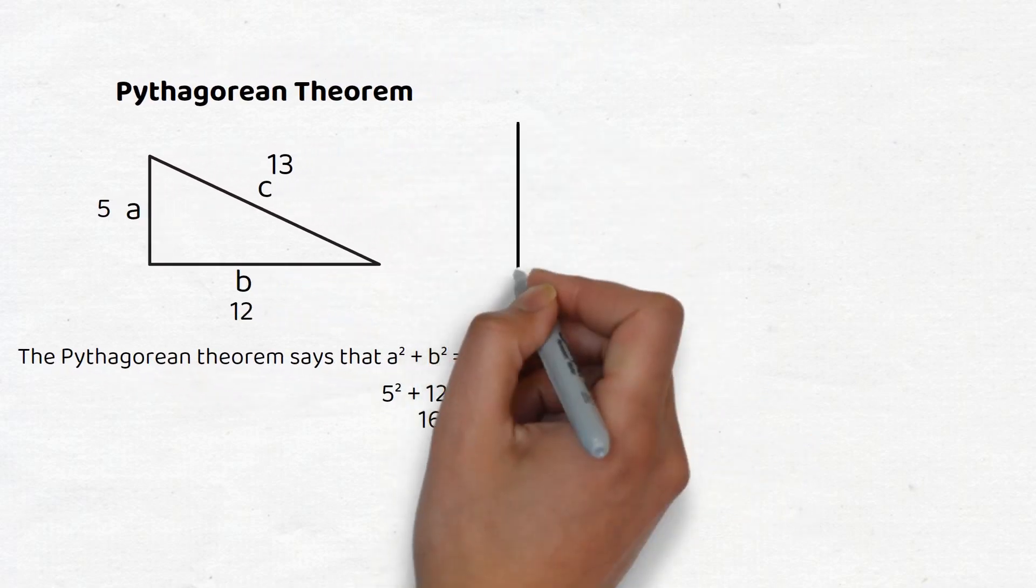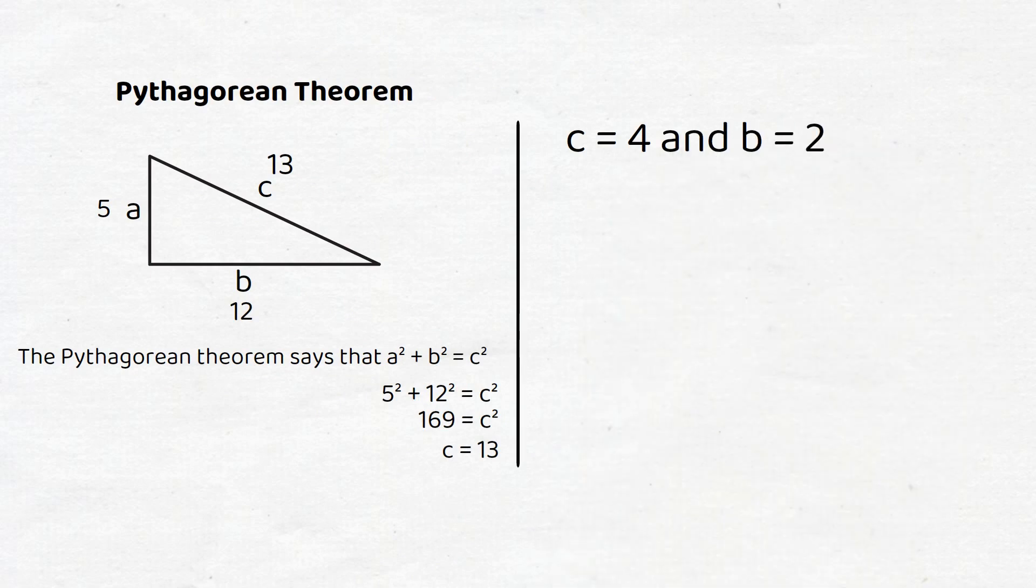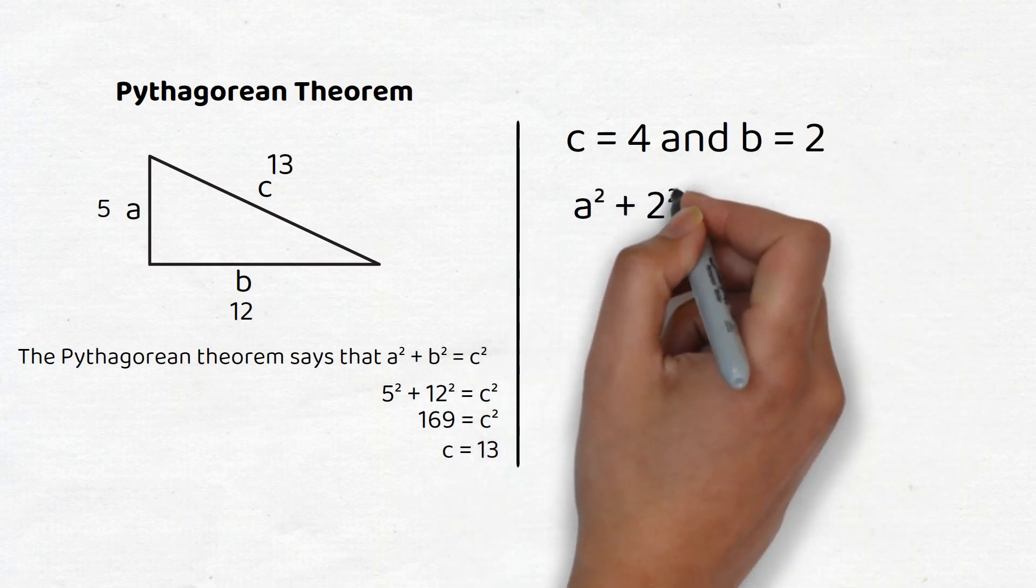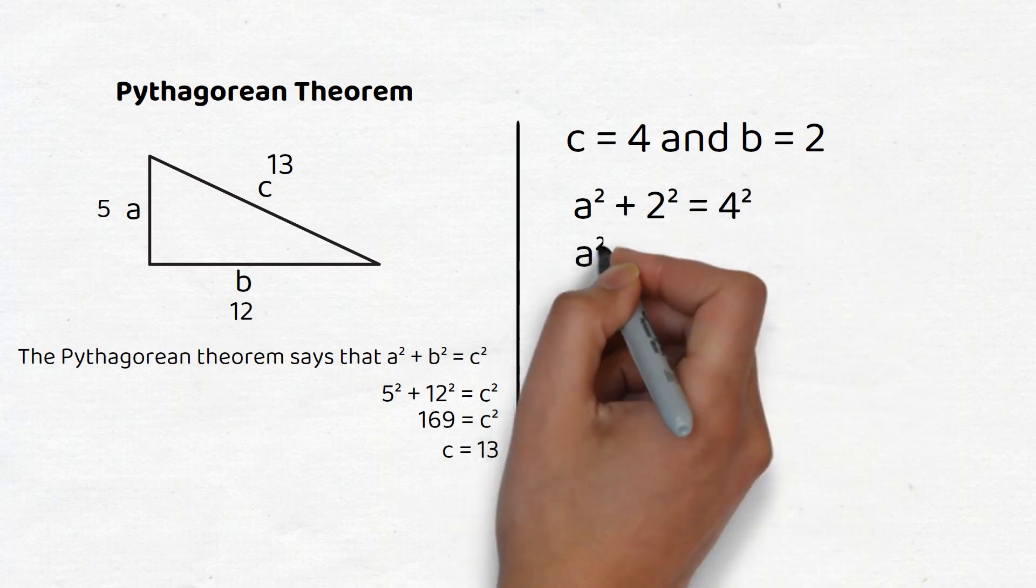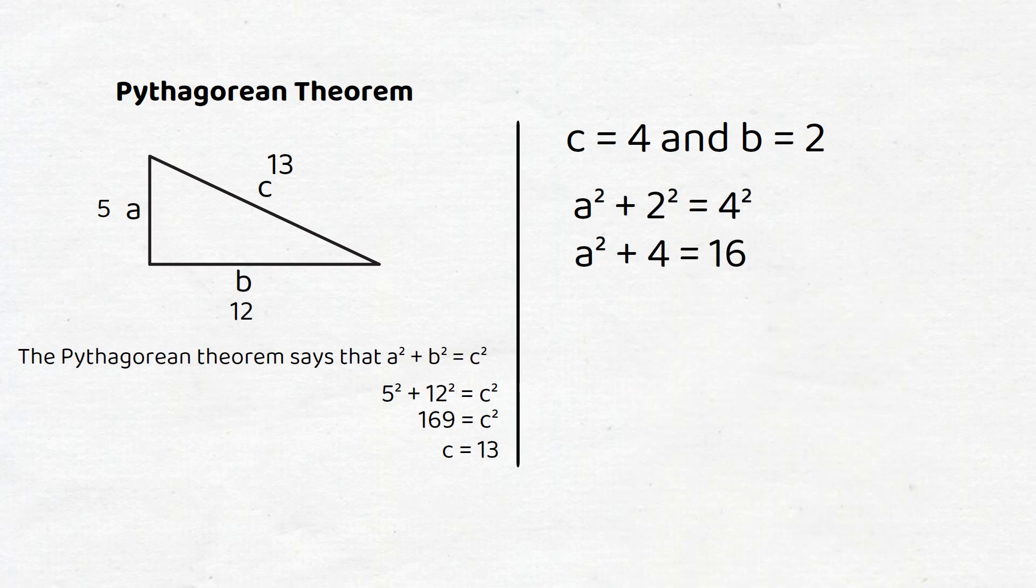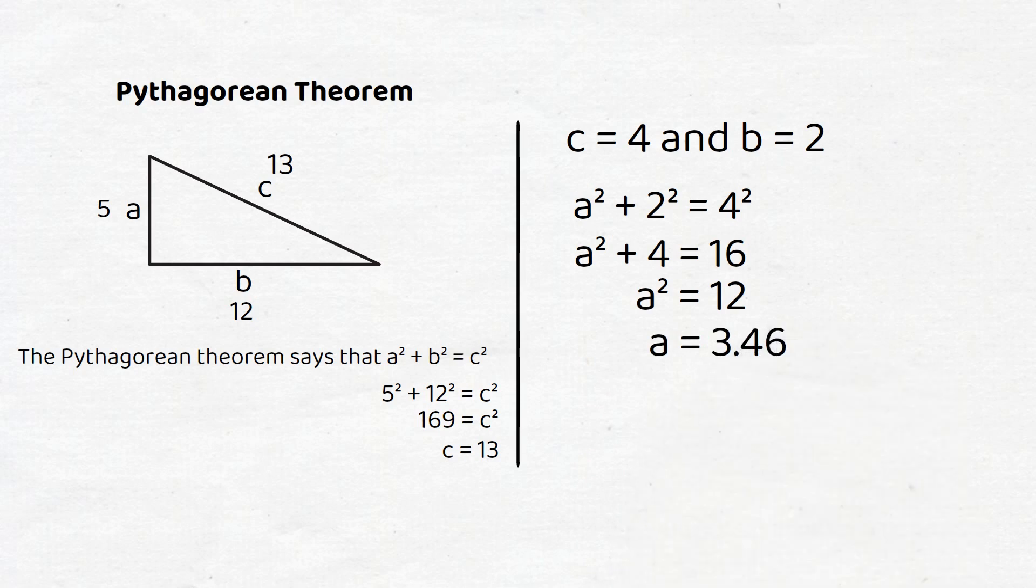Let's look at another example. If c is 4, and b is 2, then from the equation a squared plus 2 squared equals 4 squared, we can conclude that a squared plus 4 equals 16, and so a squared equals 12. Therefore, a equals the square root of 12, which is about 3.46.